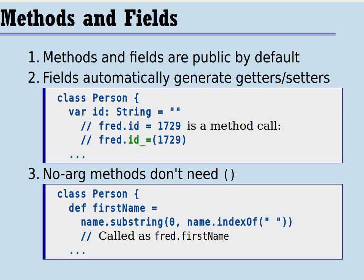Let's first focus on methods and fields. In Scala, methods and fields are public by default. That's pretty convenient, so you don't have to write the keyword public because that, in fact, is a common default, certainly for methods.